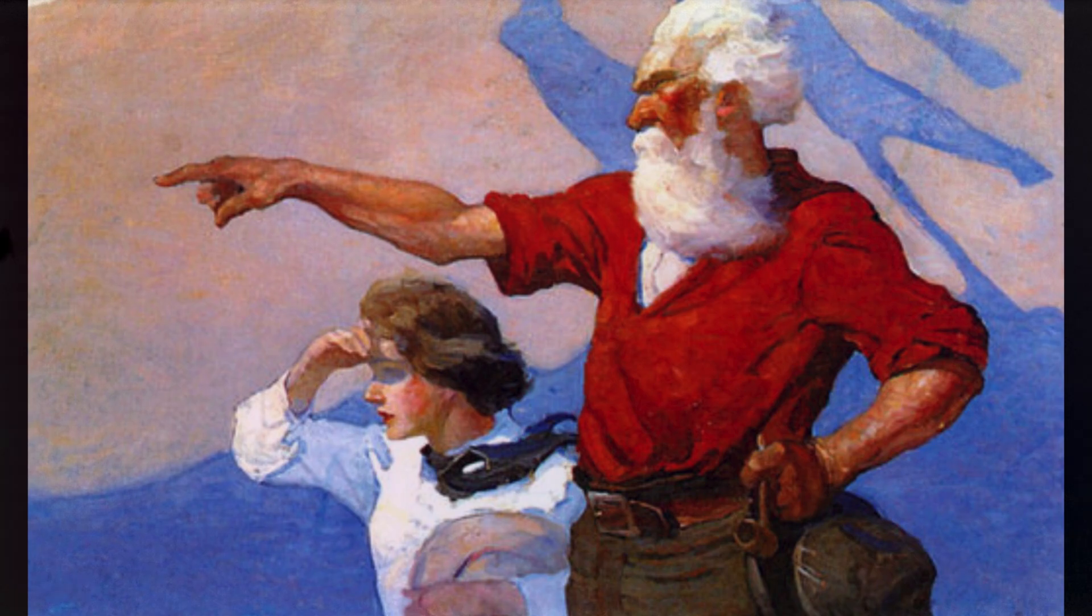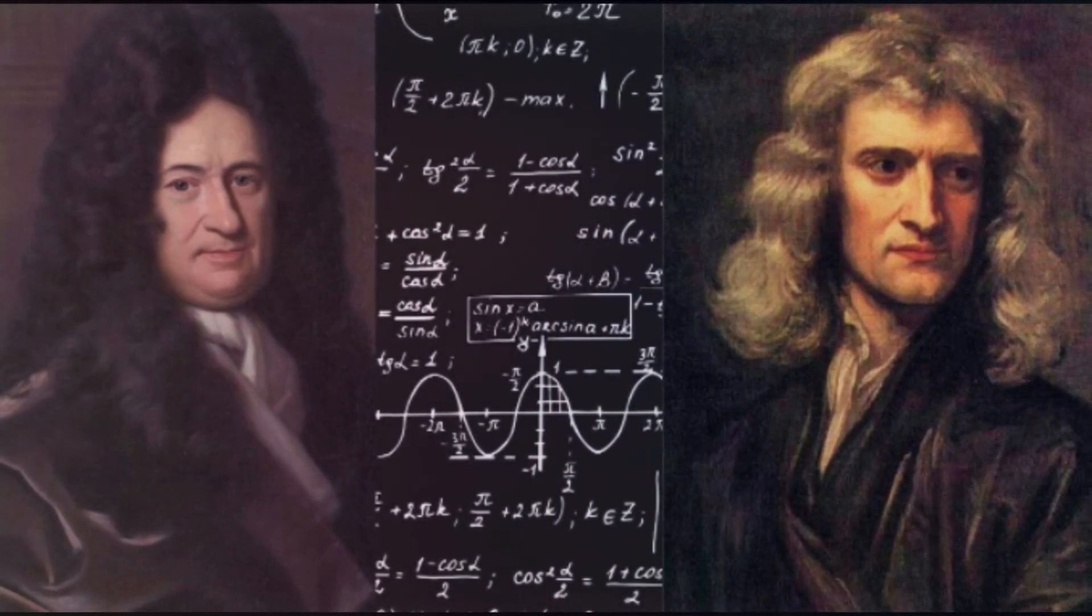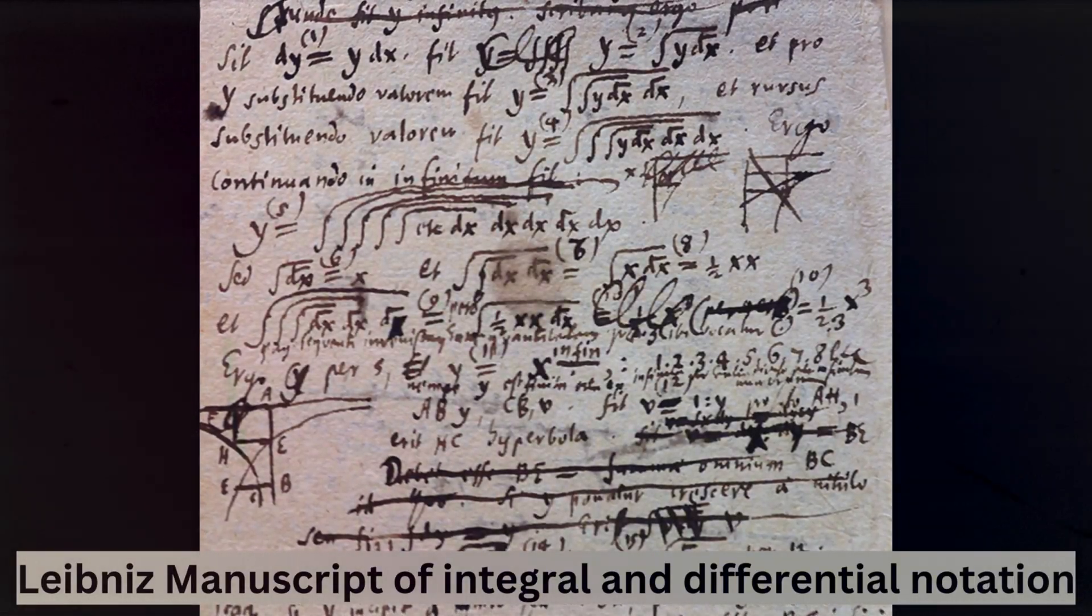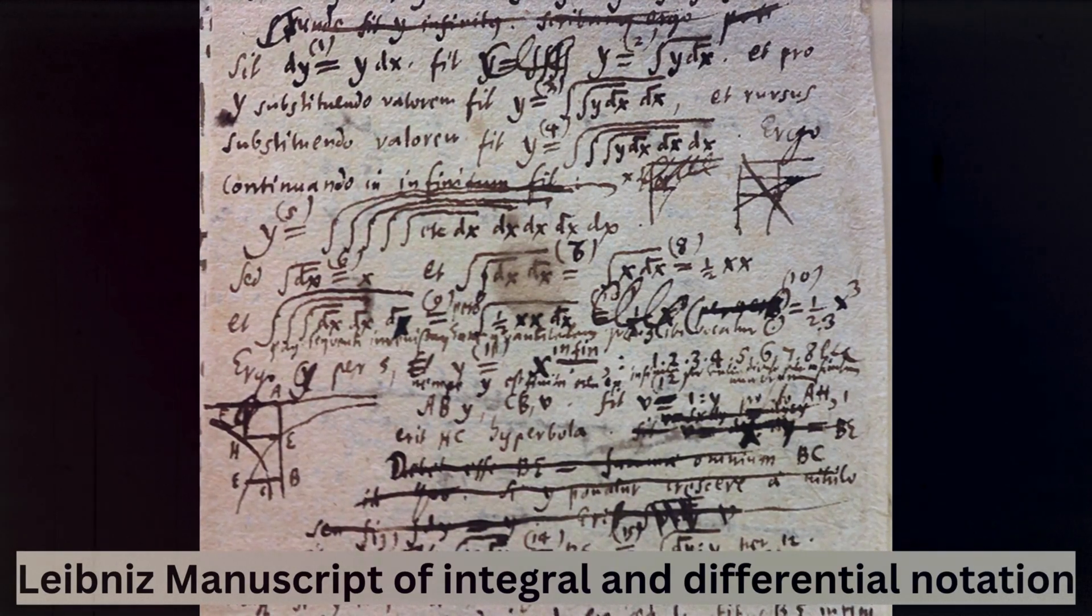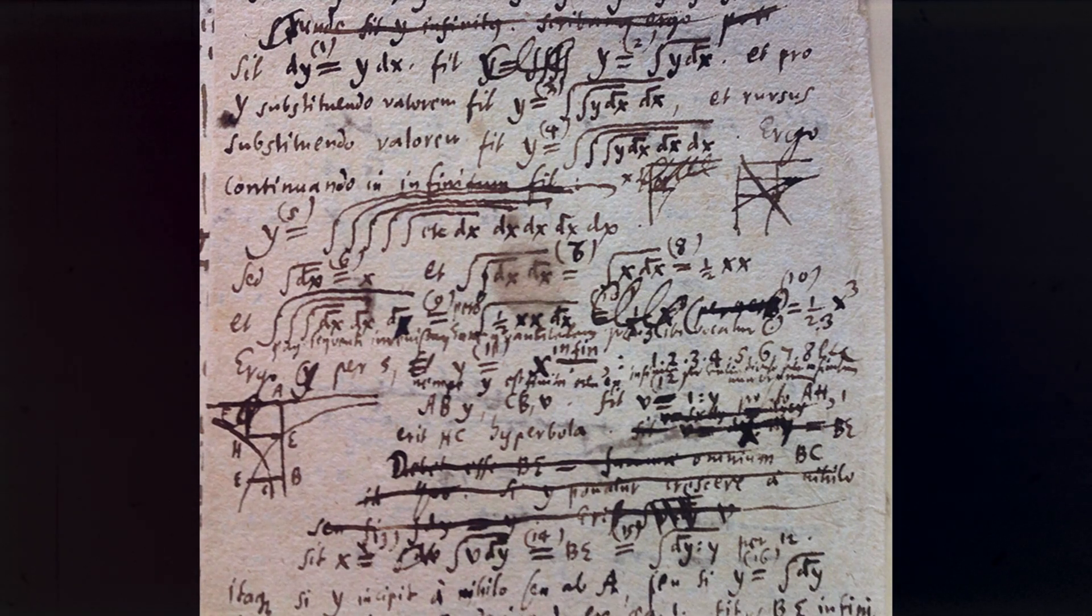Few intellectual rivalries in history have been as contentious or as consequential as that between Leibniz and Sir Isaac Newton. At the centre of their dispute was the discovery of calculus, a mathematical breakthrough that would revolutionise physics and engineering. Both men developed the fundamental principles of calculus independently, Newton in England and Leibniz in mainland Europe. Yet a bitter controversy erupted over who had arrived at the method first. Leibniz notation, which introduced the integral and differential symbols still used today, proved more practical and influential in the long run, while Newton's approach was largely confined to British mathematics for much of the 18th century.